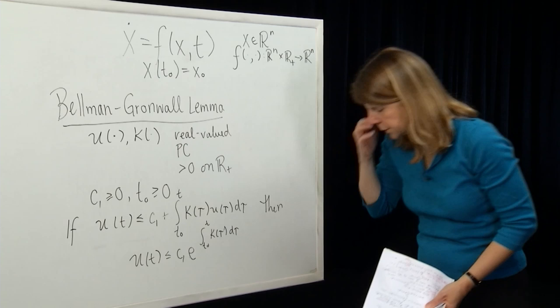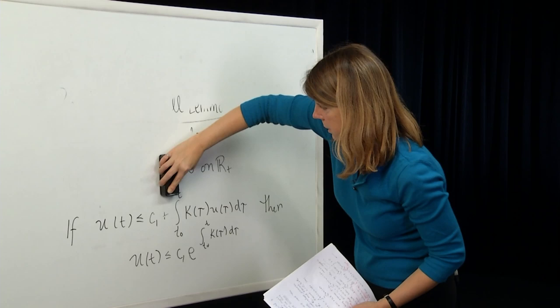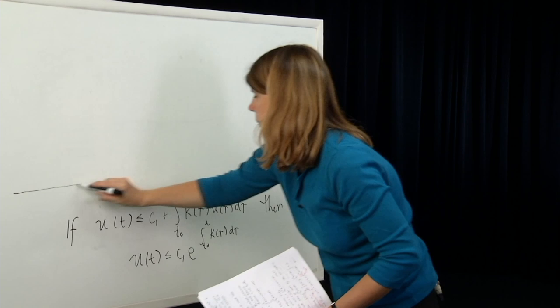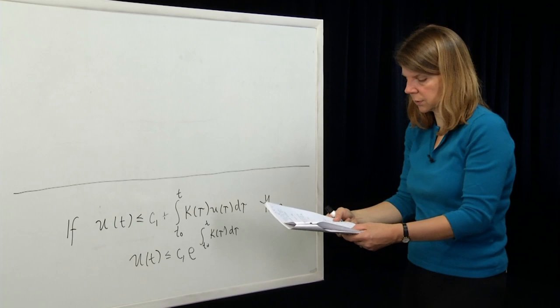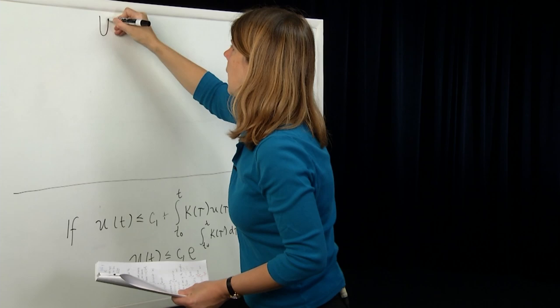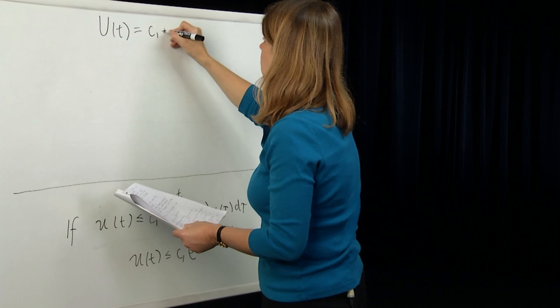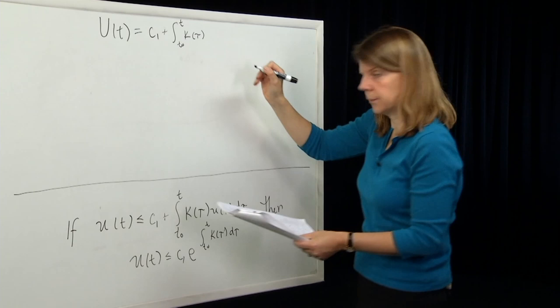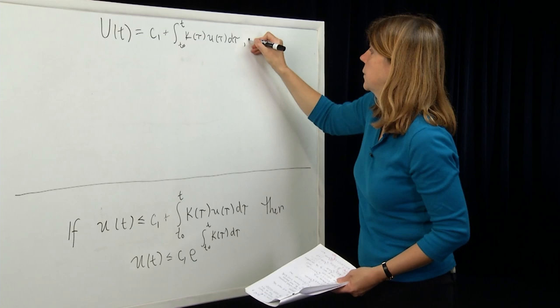The proof of this is quite nice — let's quickly show it. We'll keep the general statement of Bellman-Gronwall visible and prove it. So let's assume t is greater than or equal to t0 — this is a forwards integration, which is what we typically do. To make things easy, let's define a capital U(t) which is equal to the bound on little u(t): capital U(t) = c1 plus the integral from t0 to t of k(τ) u(τ) dτ. So we've just renamed the right-hand side of that inequality, which tells us that u(t) is less than or equal to capital U(t).